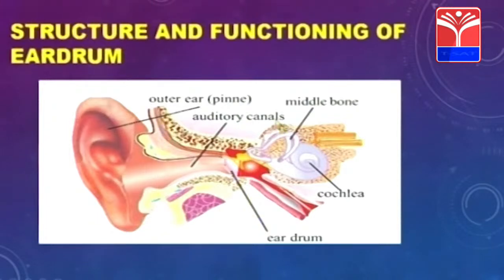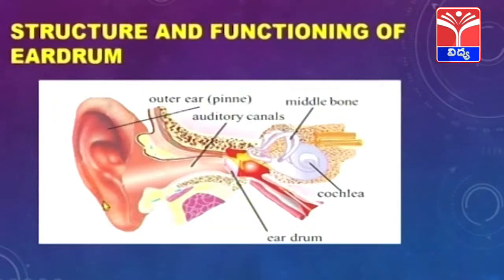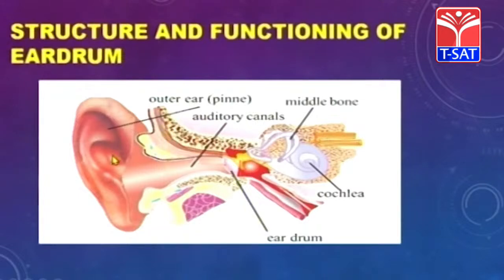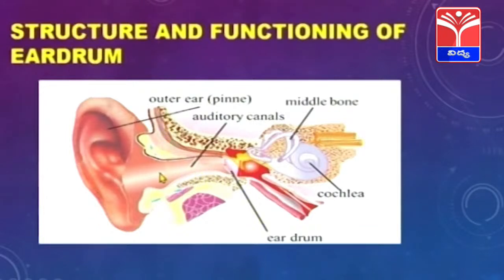If you look at the outermost part of the ear, this is called the outer ear — the external ear or the outer ear — which is in the shape of a loudspeaker or a funnel. This is going to receive the sound vibrations. The sound vibrations travel through the canal called the auditory canals.